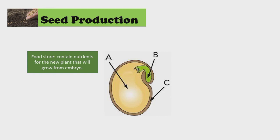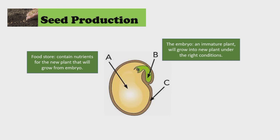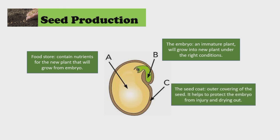Do you know what part B is? That's the embryo — an immature plant that will grow into a new plant under the right conditions. Part C is the seed coat, the outer covering of the seed. It helps to protect the embryo from injury and drying out.